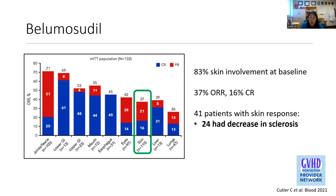Belumocidil is a ROCK2 inhibitor, FDA-approved for third line and beyond. In this study, there was high baseline skin involvement at 83%, with a 37% overall response rate in the skin and 16% complete responses. They reported specifically on sclerosis: of the 41 patients with a skin response, 24 had a decrease in sclerosis — a promising signal. We tend to think about ruxolitinib and belumocidil more so for skin sclerosis. Ibrutinib's approval study did not specifically report on skin sclerosis.